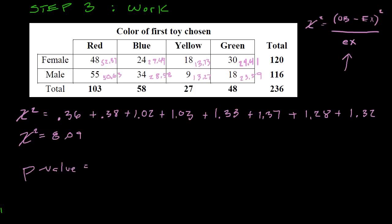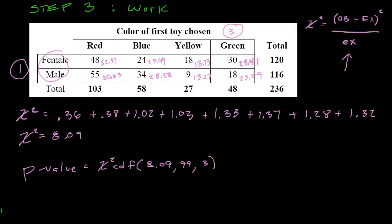Now it's time for the p-value. I'll use the TI-84's chi-squared CDF function: chi-squared CDF(8.09, 99, degrees of freedom). For degrees of freedom: on the left we have 2 categories minus 1 = 1, across the top we have 4 categories minus 1 = 3, and 3 times 1 = 3 total degrees of freedom. Running chi-squared CDF(8.09, 99, 3) gives a p-value of 0.0442.